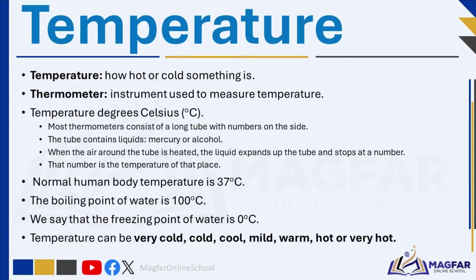Let us look at the first weather element in more detail. Temperature tells us how hot or cold something is. A thermometer is an instrument used to measure temperature. Weather changes from day to day. When it is very cold, the temperature is low. When it is very hot, the temperature is high. On days when it is neither hot nor cold, we say that the temperature is mild.